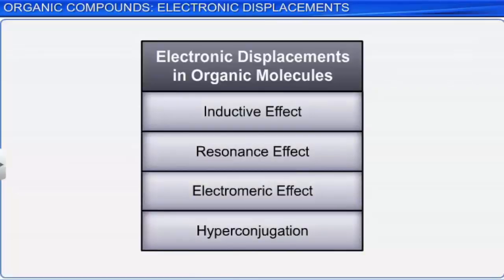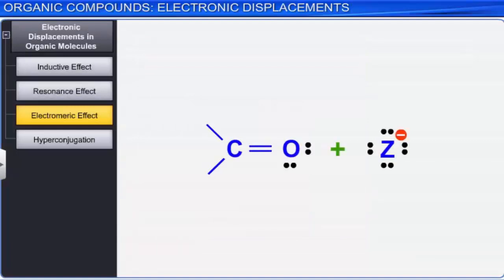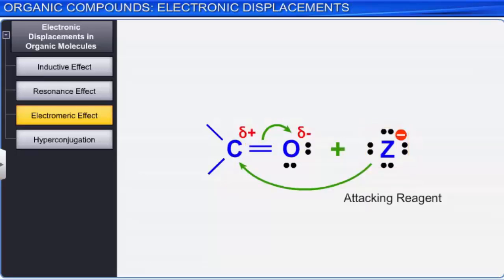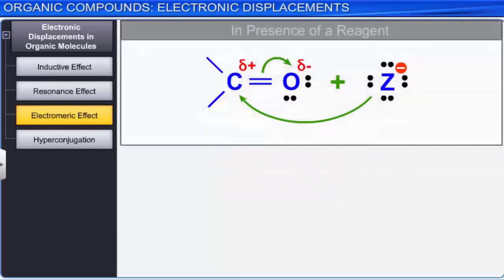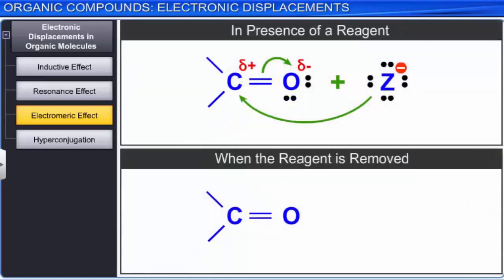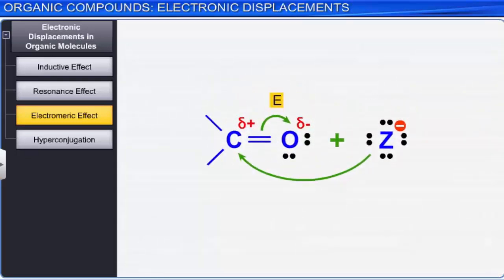The electromeric effect is a temporary effect observed only in organic compounds with multiple bonds in the presence of an attacking reagent. It may be defined as the complete transfer of the shared pair of pi electrons of multiple bonds to one of the atoms in the presence of an attacking reagent. It is important to note that this effect ceases to exist as soon as the attacking reagent is removed from the domain of the reaction. This effect is represented by E and the shifting of electrons is shown by a curved arrow.